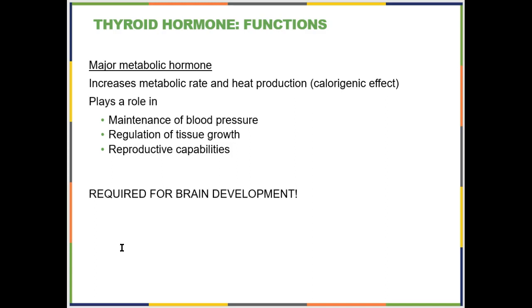Thyroid hormone is your major metabolic hormone. In adults, we think of it as regulating your metabolic rate: if thyroid hormone levels go up, your metabolic rate goes up; if they go down, your metabolic rate goes down. In fetuses and infants, thyroid hormone is an absolute requirement for brain development. So it has two very different roles: metabolism in adults and neural development in fetuses and newborns.